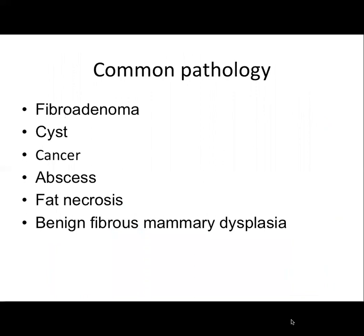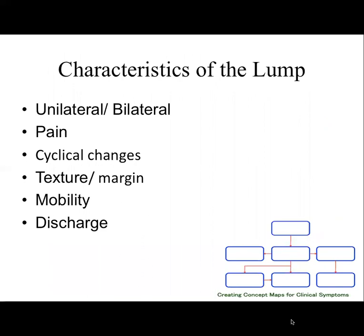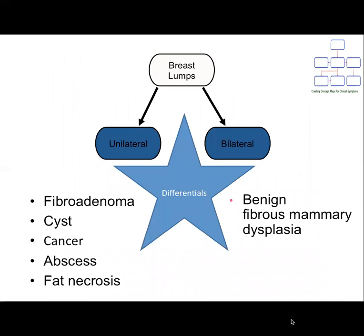Here is the common pathology that presents with breast lumps. We use these characteristics to narrow down our differentials of breast lumps. Apart from benign fibrous mammary dysplasia, all other lumps usually present as unilateral lumps. Cysts might present as multiple lumps but in one breast.